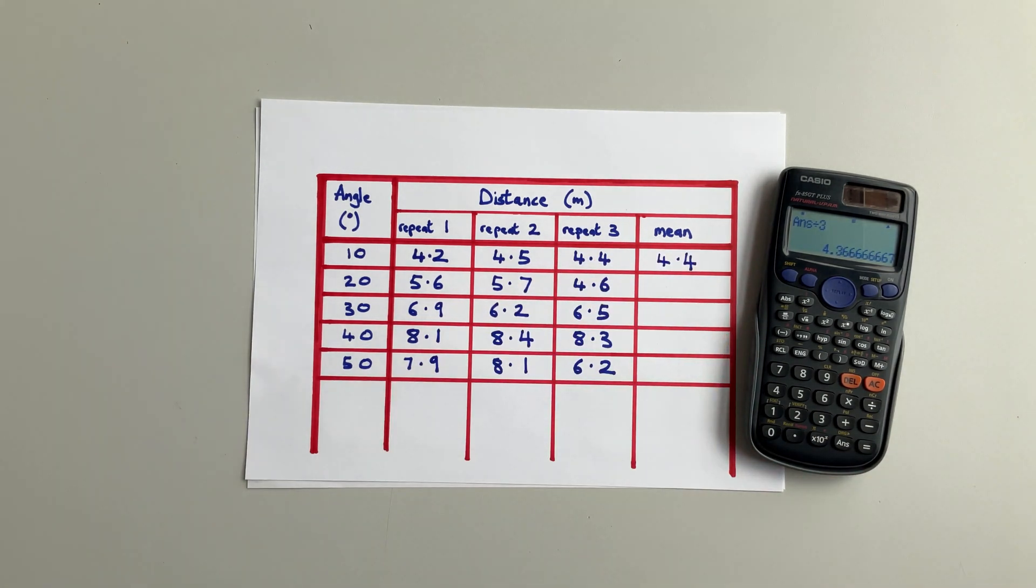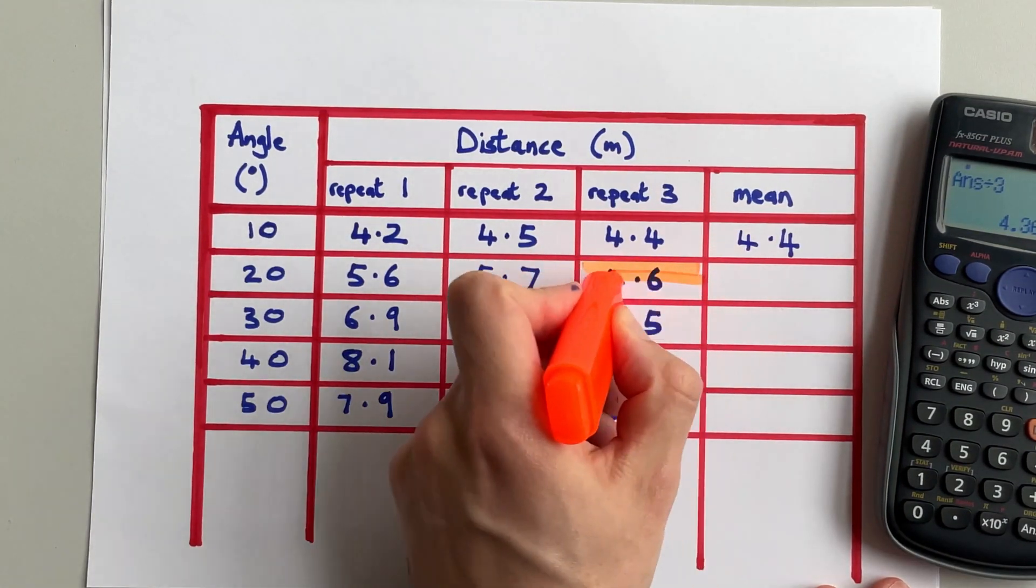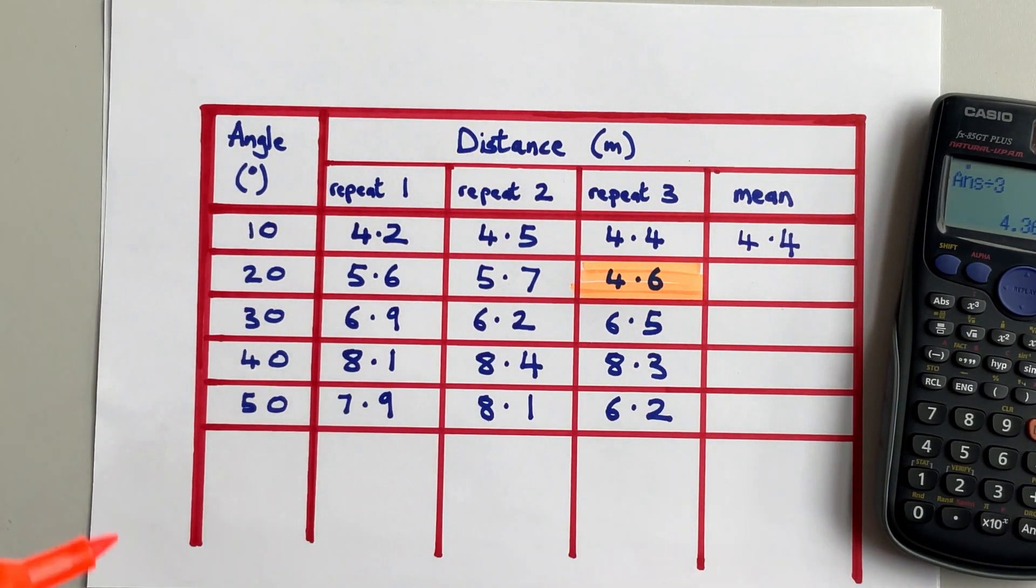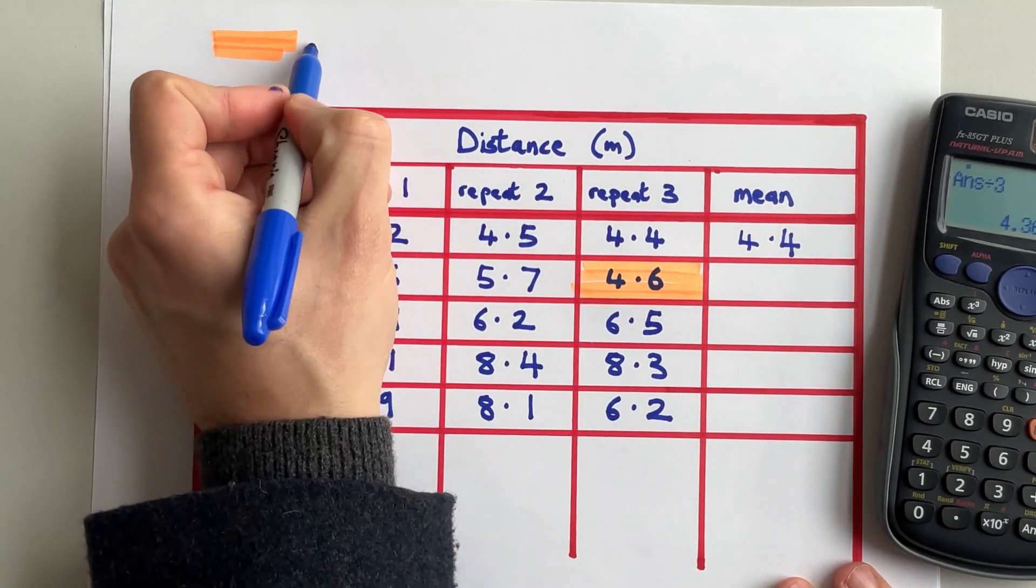If you look at the repeat readings at 20 degrees, you'll notice two of them are close to each other and one of them is far away. That one that's far away is called an anomaly. And what we do is we highlight it to say it's an anomaly, add a key, and then ignore it in our calculation.